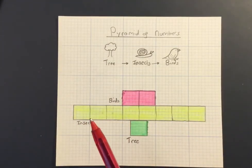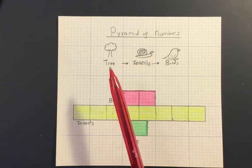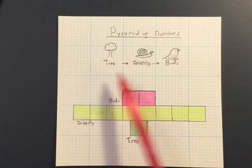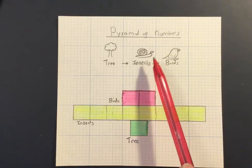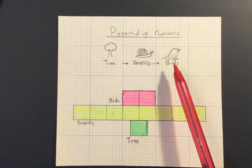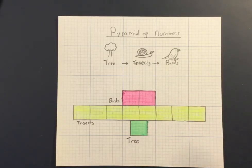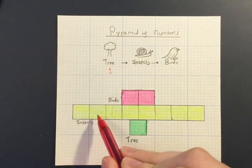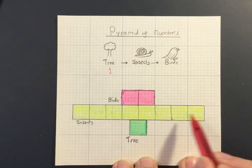So this pyramid of numbers is made for this food chain. We've got one really large tree that is then fed upon by our primary consumer, the insects, and then the insects are fed upon by the birds. And in this case we're only going to have one tree and one, two, three, four, five, six, seven, eight insects and two birds.